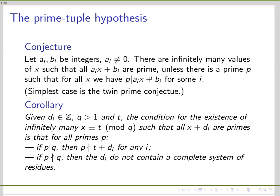I will use a corollary written in a somewhat different form. We want to find prime numbers x in a given congruence class modulo some number q, such that a finite number of translates are all prime. The condition is: for divisors of q, the zero class modulo p should be missing, and for primes not dividing q, at least some residue class should be missing.